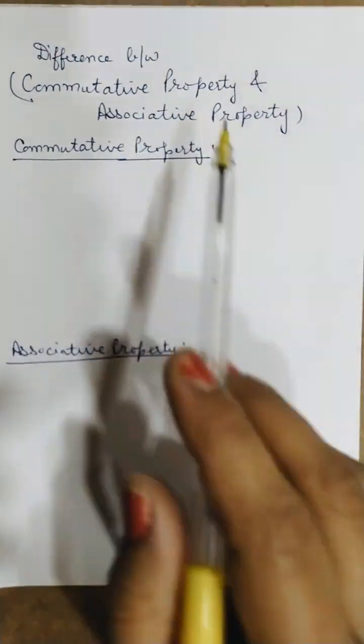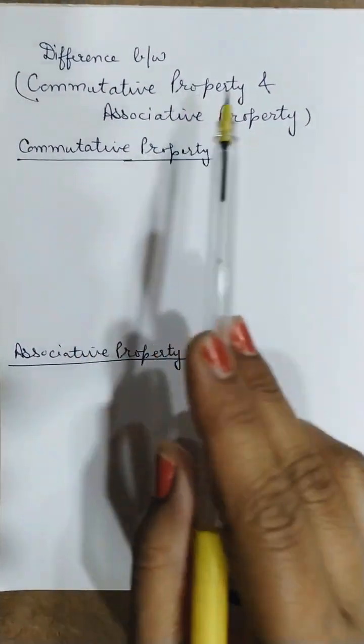Hello, let me tell you the difference between commutative property and associative property.